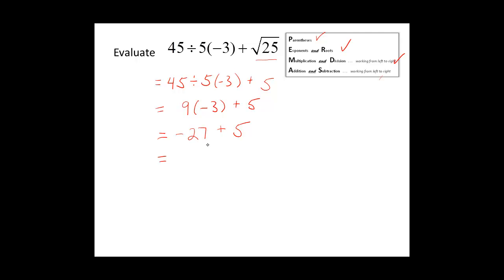We have completed multiplication and division and move on to addition and subtraction. We have negative twenty-seven plus five. The signs are different, so we subtract the absolute values: twenty-seven minus five equals twenty-two. We keep the sign of the dominant number — twenty-seven is negative — so our answer is negative twenty-two.